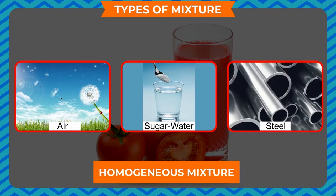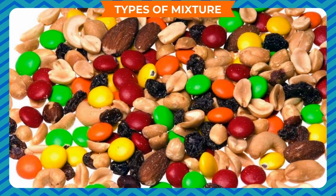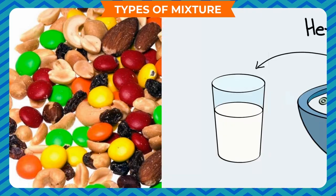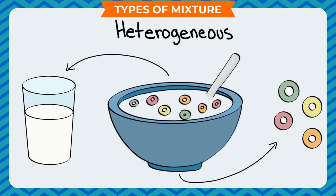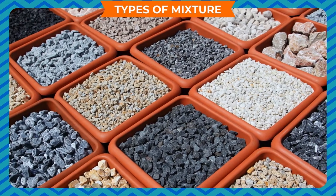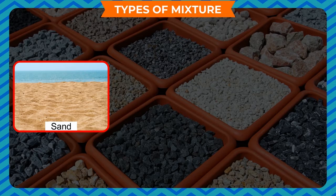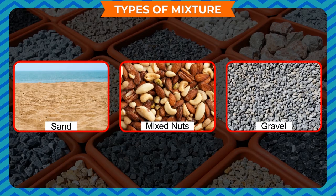Heterogeneous mixture: the components forming the mixture are not uniformly distributed; they have different amounts of each component in different samples. Matter is unequally distributed throughout the mixture. For example, sand, mixed nuts, and gravel are heterogeneous mixtures.